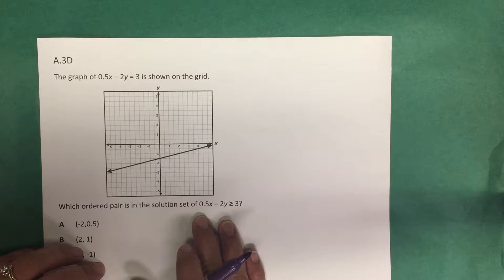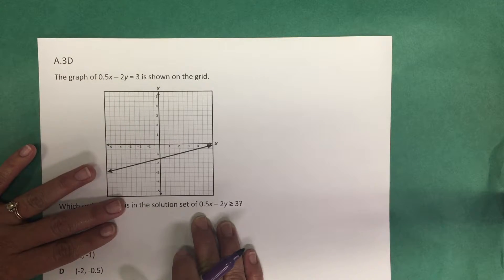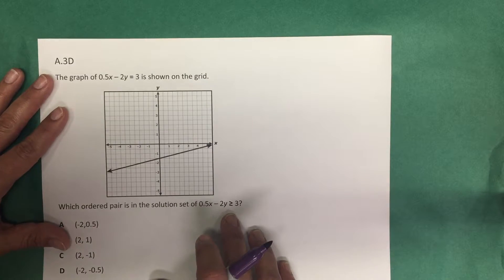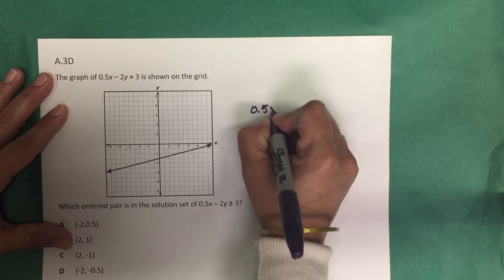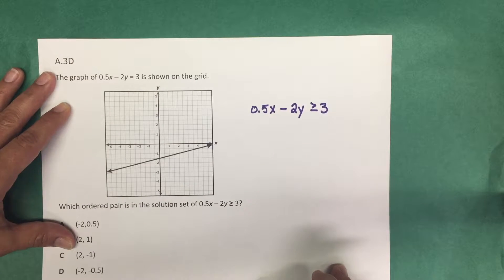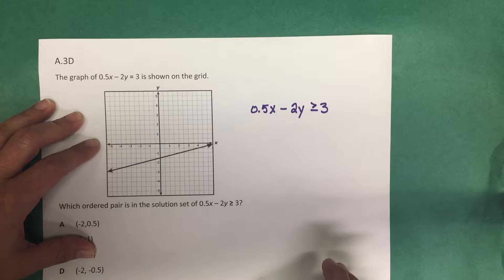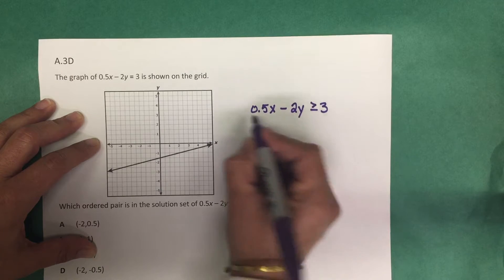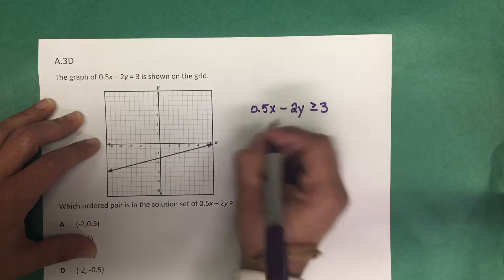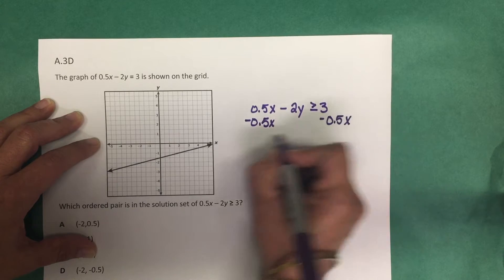Before we can determine which part of the graph to shade — whether above the line or below the line — we need to rewrite this inequality into slope-intercept form. So let's work with 0.5x minus 2y is greater than or equal to 3. We want to get y by itself, in y = mx + b form. We're going to subtract 0.5x from both sides of the inequality.